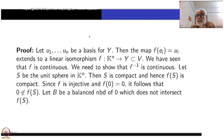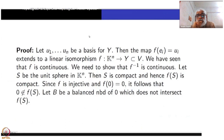So f is continuous. The only remaining thing is that f inverse should also be continuous from Y to K^n. This is what we have to show. Take S to be the unit sphere in K^n with the Euclidean topology. Then S is compact.